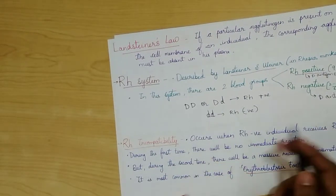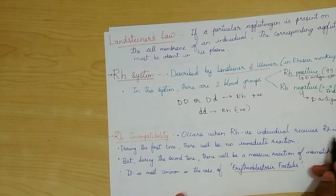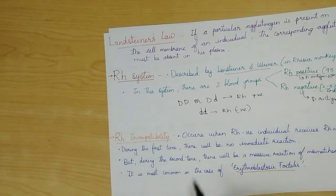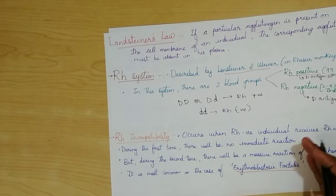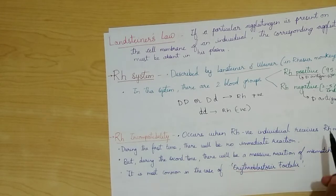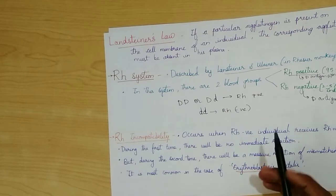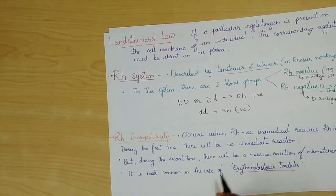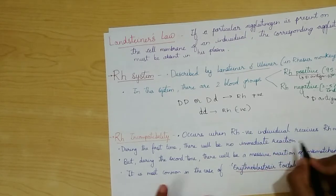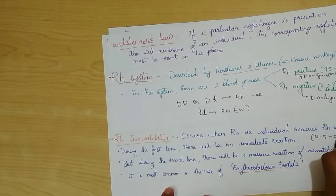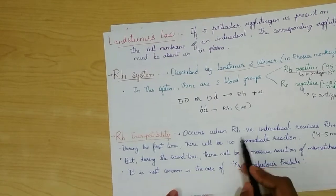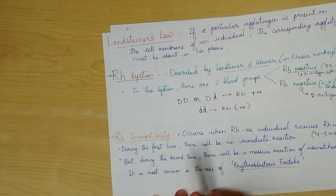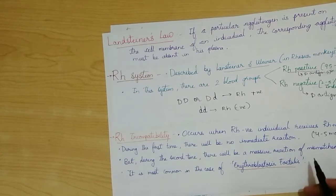RH incompatibility occurs when an RH negative individual receives blood from an RH positive donor. During the first transfusion there will be no immediate reaction because there are no antibodies present in the RH negative individual against RH positive blood. However, antibodies start developing and it takes at least four to five months for the full development of antibodies. During a second transfusion there will be a massive mismatch reaction causing severe hemolysis.